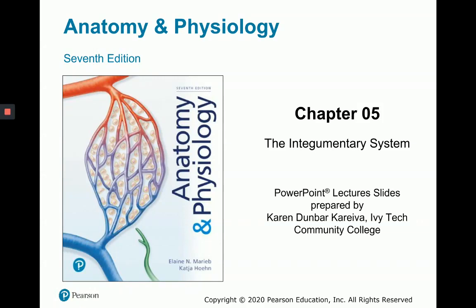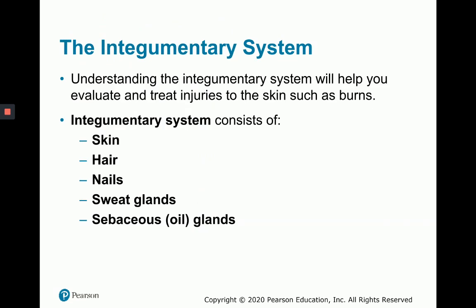Today we're going to look at Chapter 5, which covers the integumentary system. The integumentary system includes not only the epidermis and dermis, or what you may think of as the skin itself, but also all of its appendages, such as hair follicles, nails, sweat glands, and blood vessels. We'll look at what the integumentary system consists of, but also evaluate injuries such as burns and skin cancer.